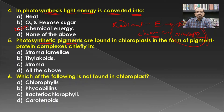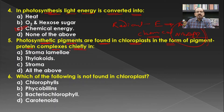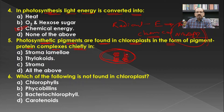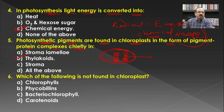Photosynthetic pigments are found in chloroplasts in the form of pigment-protein complexes, chiefly in which structure? We have seen the different photosynthetic apparatus including chloroplasts, which contain grana. In the grana there are lamellae, which are considered as thylakoids, in which there are protein complexes responsible for absorbing sunlight. Hence the answer for this question is the thylakoid.